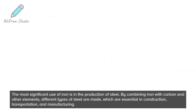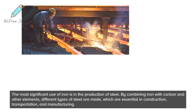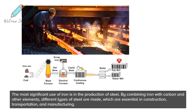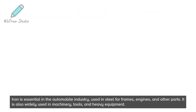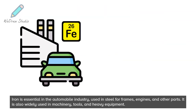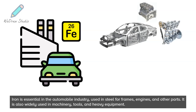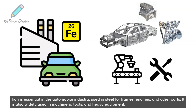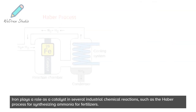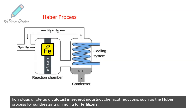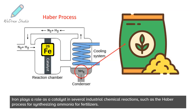The most significant use of iron is in the production of steel. By combining iron with carbon and other elements, different types of steel are made, which are essential in construction, transportation, and manufacturing. Iron is essential in the automobile industry, used in steel for frames, engines, and other parts. It is also widely used in machinery, tools, and heavy equipment. Iron plays a role as a catalyst in several industrial chemical reactions, such as the Haber process for synthesizing ammonia for fertilizers.